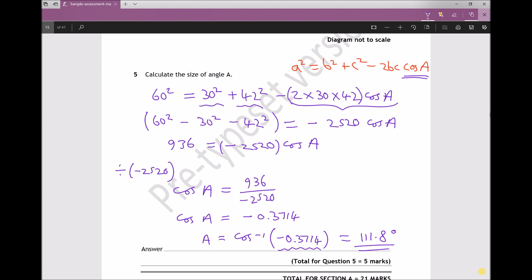It's probably worth noting that in order to get an answer in degrees here, we need to make sure that our calculator is in degrees mode. So before you do that cos to the minus 1 calculation, just check that your calculator is in degrees mode as opposed to radians mode.